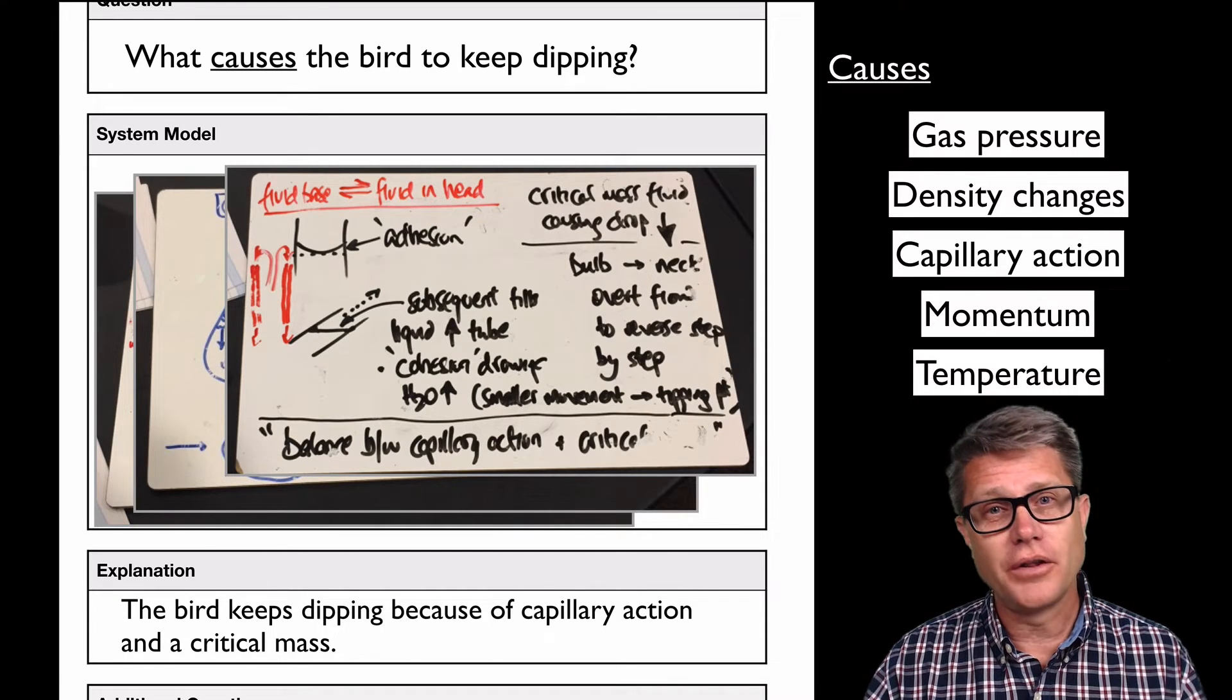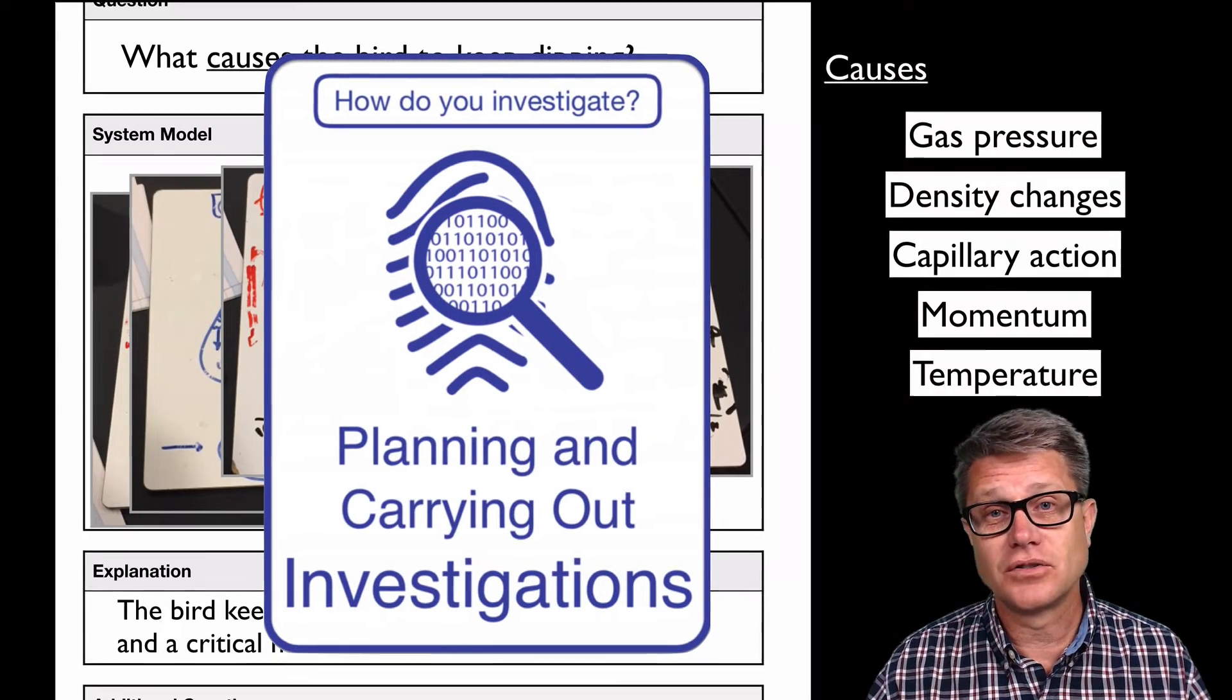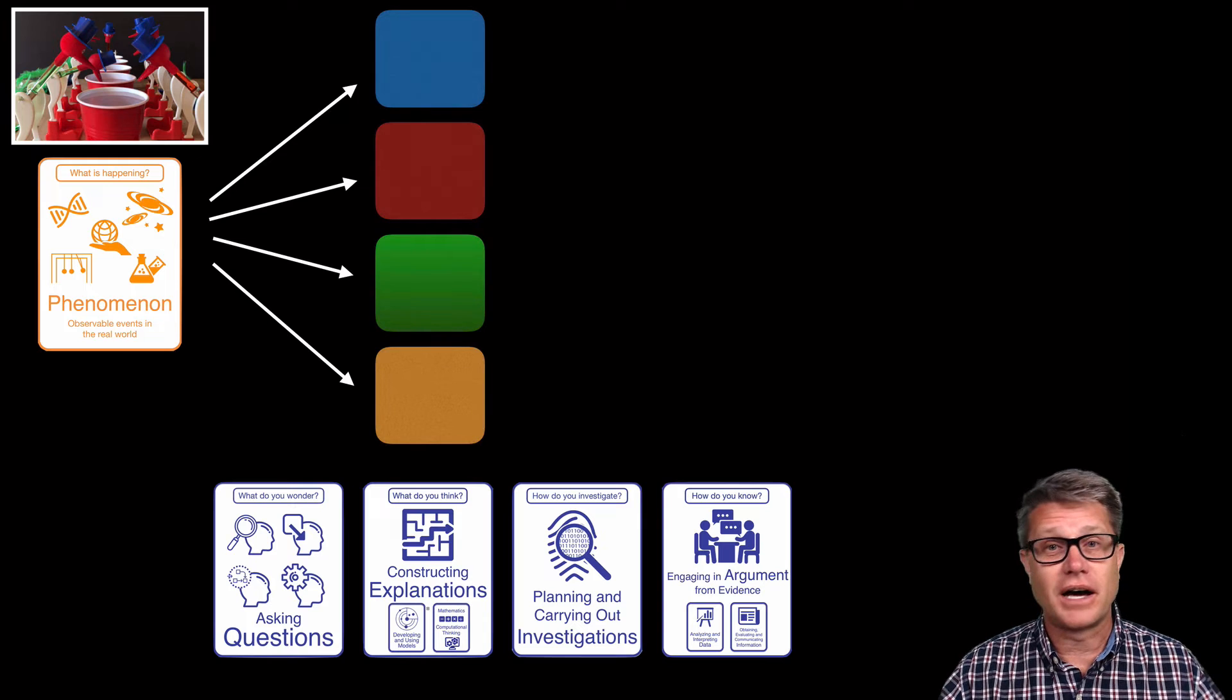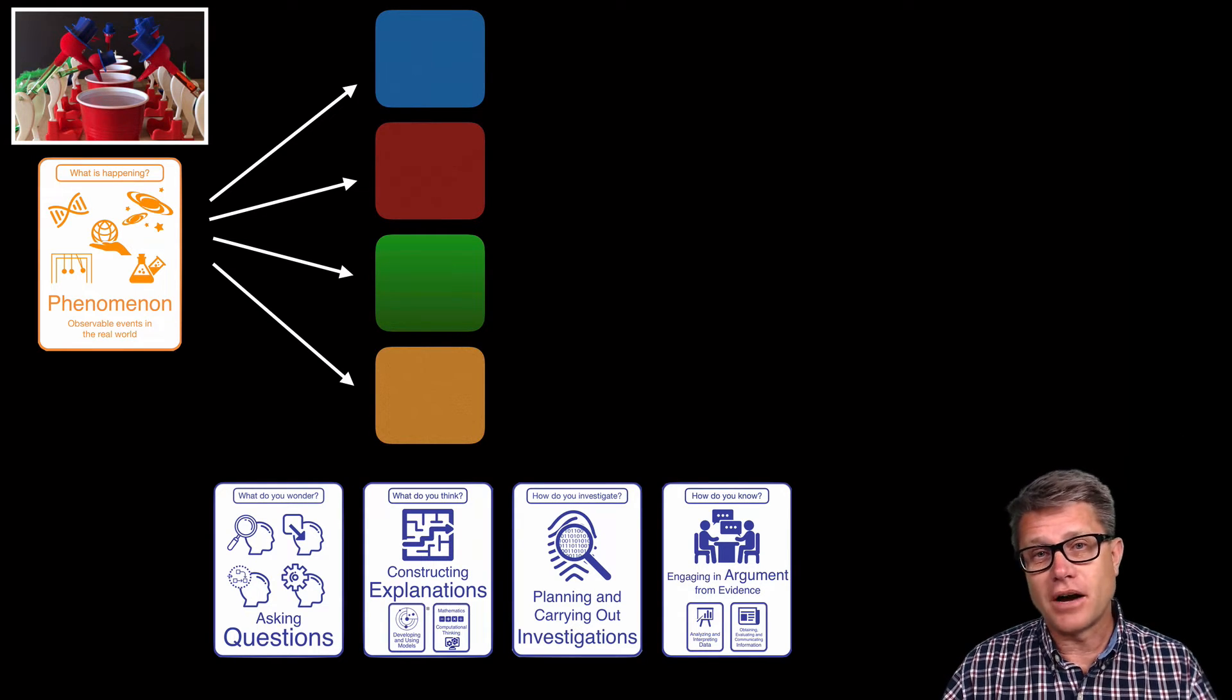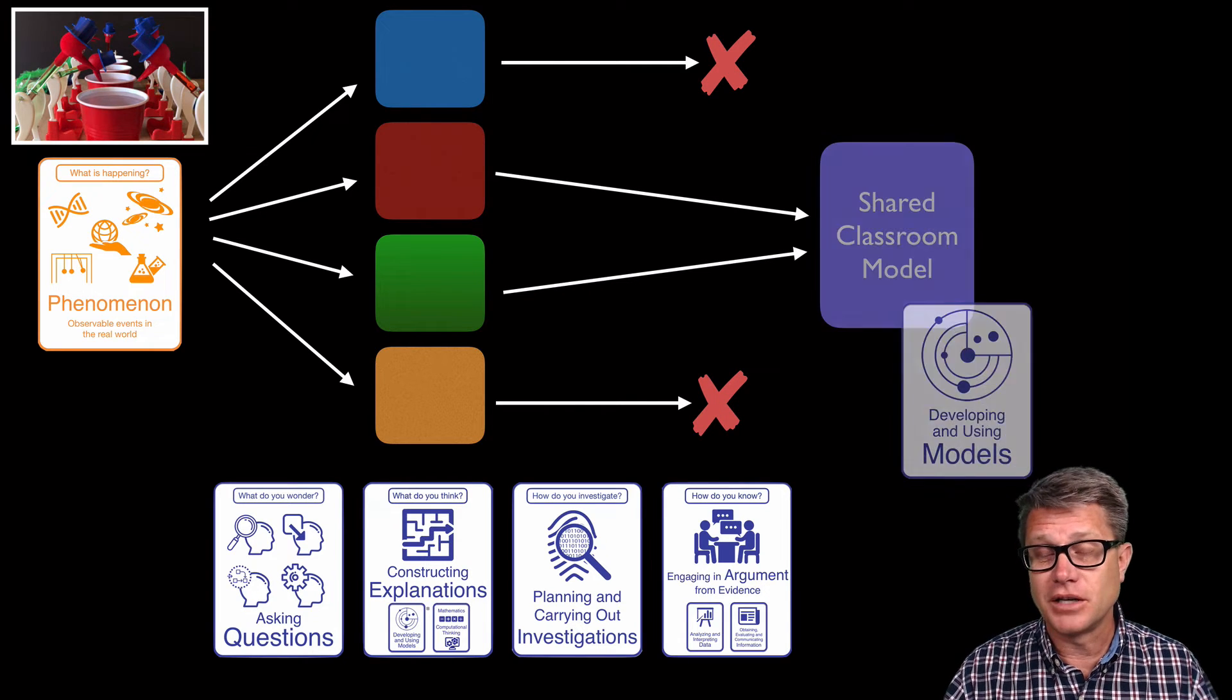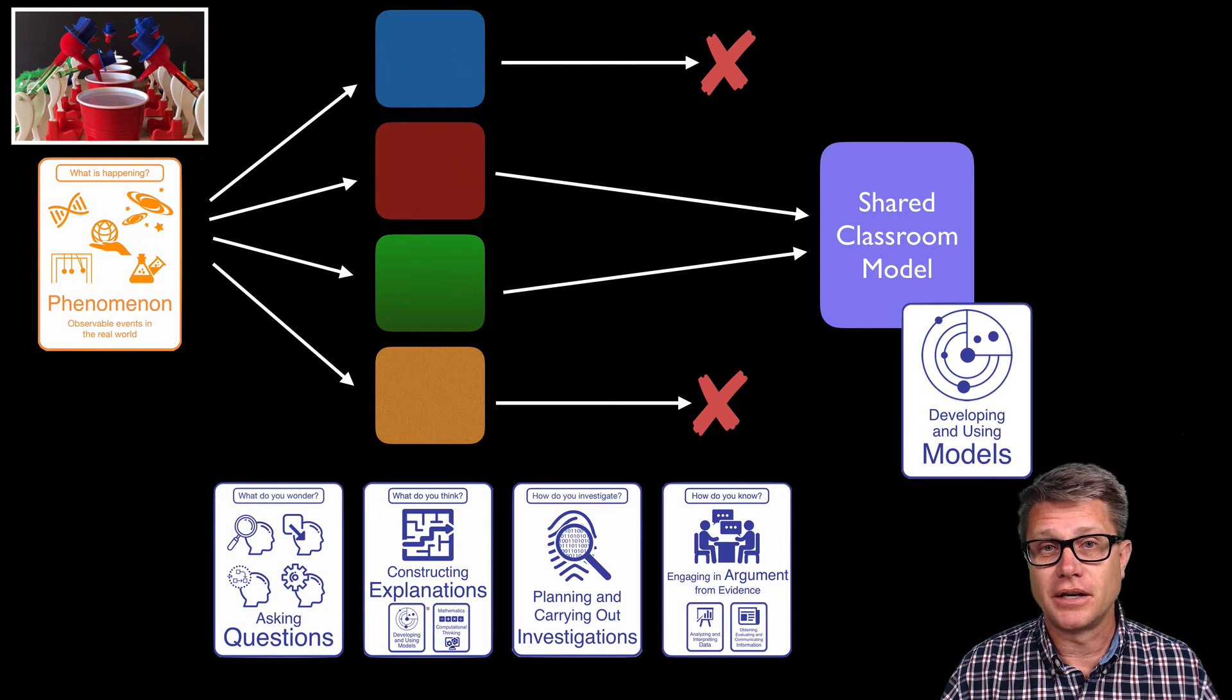And so now you as a teacher know what all the explanations are in the class. And the next step is to test those models, to test those explanations out. So if we look at where this fits in this whole idea of inquiry, we start with a phenomena. We use questions to develop a lot of explanations or you could call those models of what we're thinking. But now we're going to systematically test each of those. That's why we do scientific investigations. Some of those models will fall apart. Some of those will have elements that we can kind of combine into a shared classroom model of what we're all thinking.